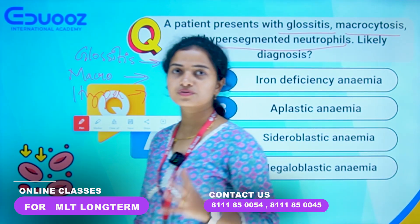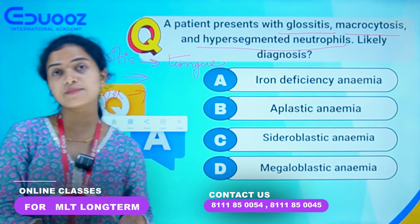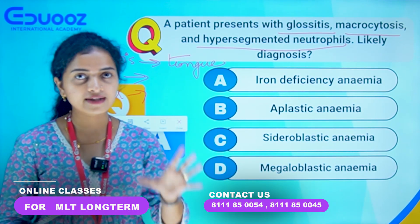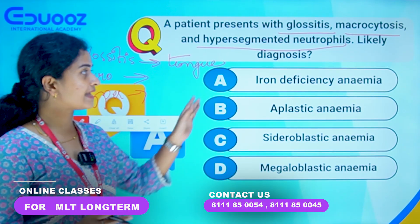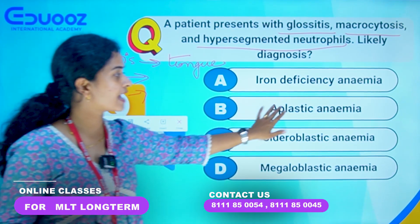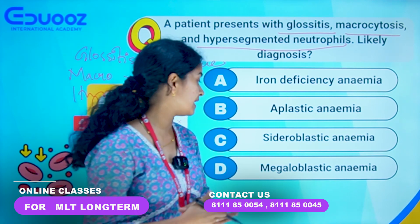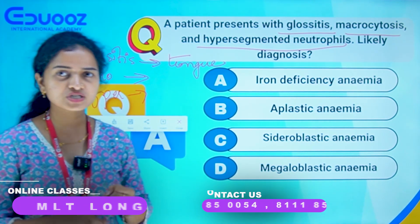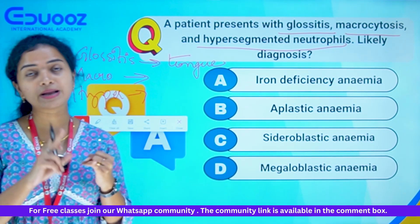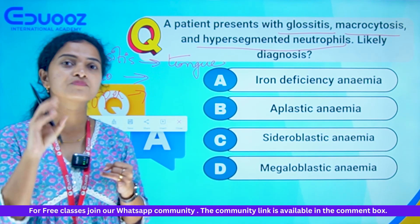So glossitis, macrocytosis, and hypersegmented neutrophils — what is the likely diagnosis? Options are A: Iron Deficiency Anemia, C: Sideroblastic Anemia, D: Megaloblastic Anemia. Iron Deficiency Anemia features microcytic cells.